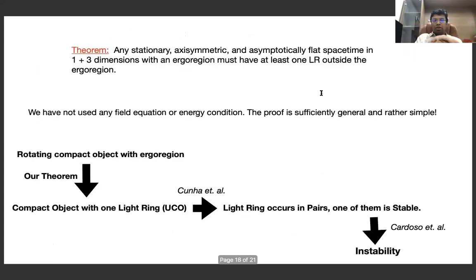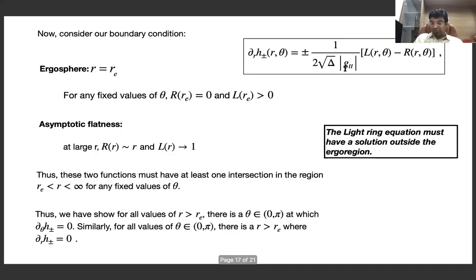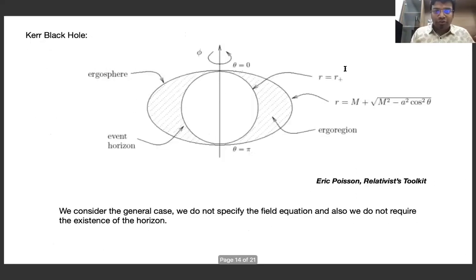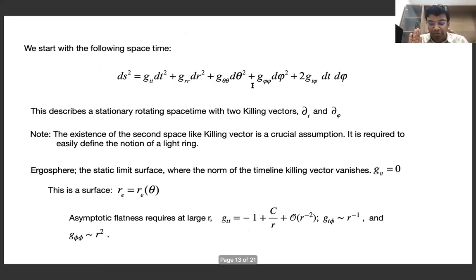There is something called the rigidity theorem in GR due to Hawking, generalized by Wald and Hollands to higher dimensions, which says that a stationary black hole must be axisymmetric. So for black holes in GR, we can always use both ∂_t and ∂_φ. But beyond GR we don't know if all stationary black holes must be axisymmetric. And since we are not using black hole properties at all, this axisymmetry assumption is very strong.